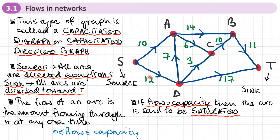Besides capacity, we have something called flow. The flow of an arc is the amount flowing through an arc at any one time. This flow has to be positive — it can be zero but not negative — and it must also be less than or equal to the capacity.